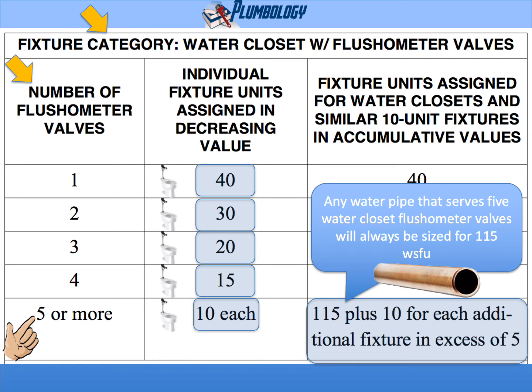So memorize or write down that decreasing scale. For water closet flush valves, it always goes 40, 30, 20, 15, 10. Once you get to 10, everything after it is a 10. So the 6th, 7th, 8th, 9th, 10th flush valve — they're all going to be 10s.